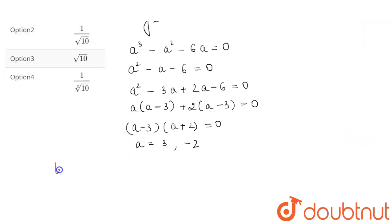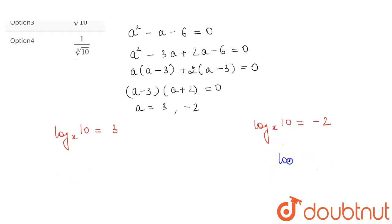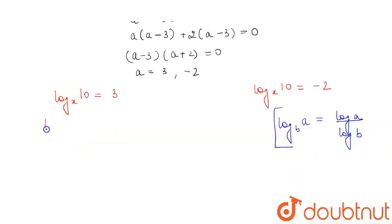Now from here we get that the value of log base x 10 can be equal to 3 or log base x 10 can be equal to minus 2. We have a property of log which says log base b a is equal to log of a divided by log b.